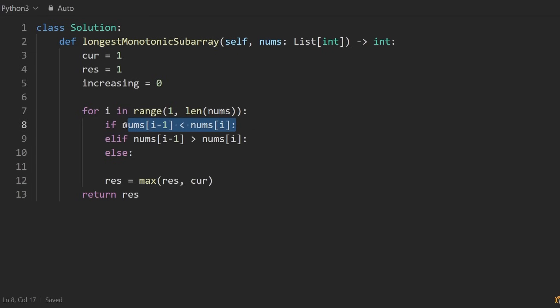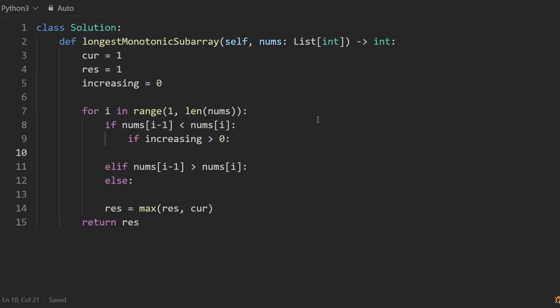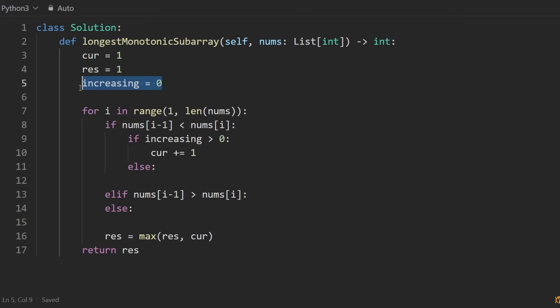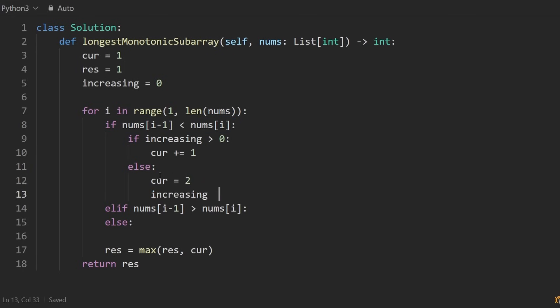So if the elements are in increasing order, there's two cases. Either our increasing variable is greater than zero, in that case, our array was already increasing. So by having one more element that's in increasing order, we can just increment the length of our current subarray by one. I think that's easy enough to handle. The other case is that our array was not in increasing order. It could have been like zero, or it could have been in decreasing order. Either way, we have now two elements that are in increasing order. So we can set the length of our current subarray to be two, and we can change the state of increasing to be true as well, in a sense by setting it to one.